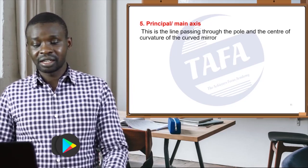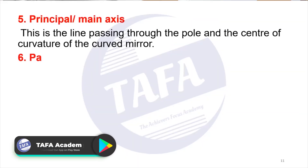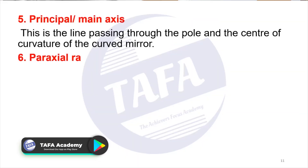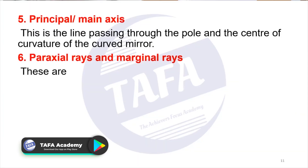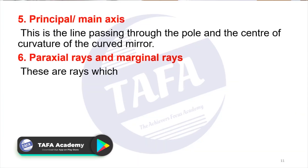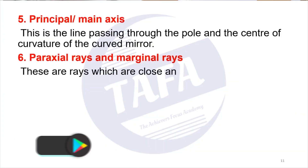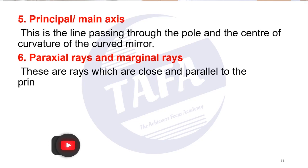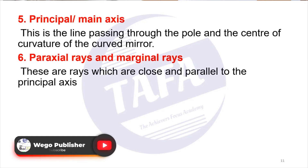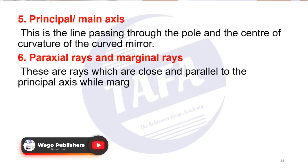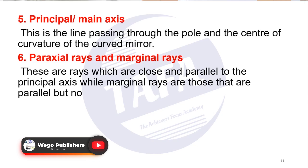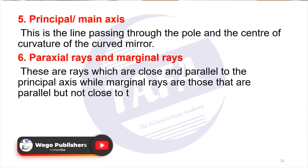We want to define paraxial rays and marginal rays. Paraxial rays are rays which are close and parallel to the principal axis, while the marginal rays are those that are parallel but not close to the principal axis.